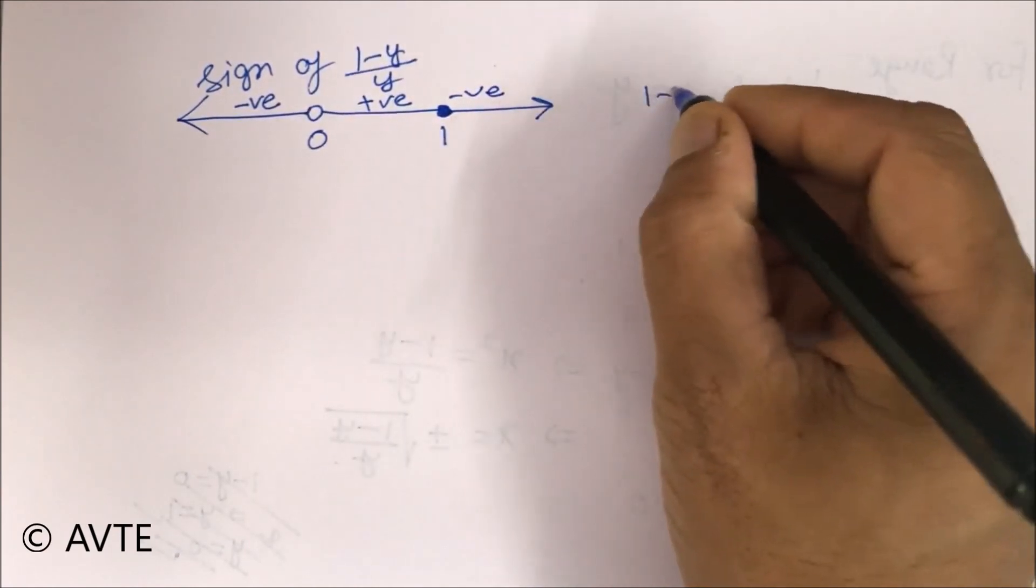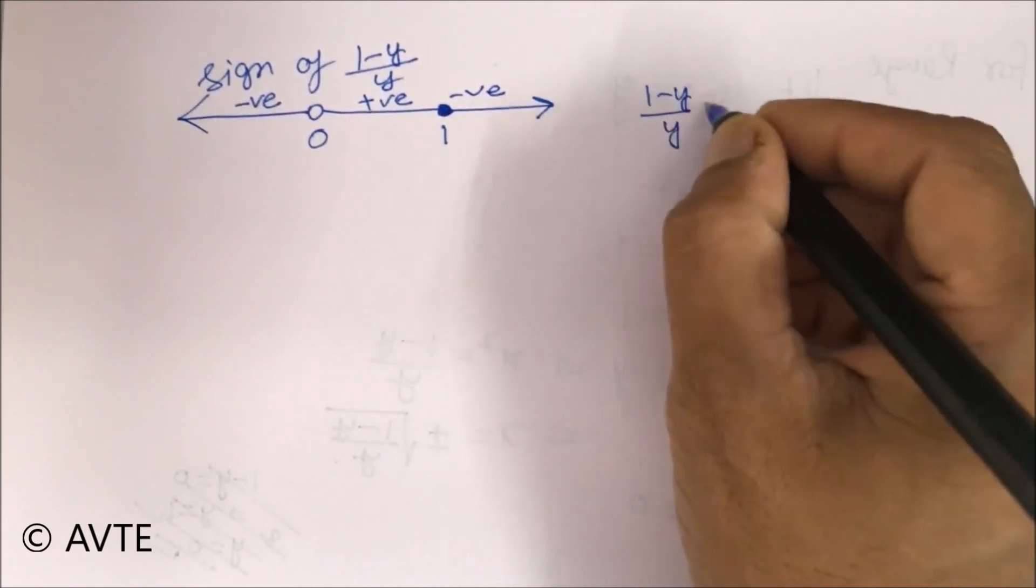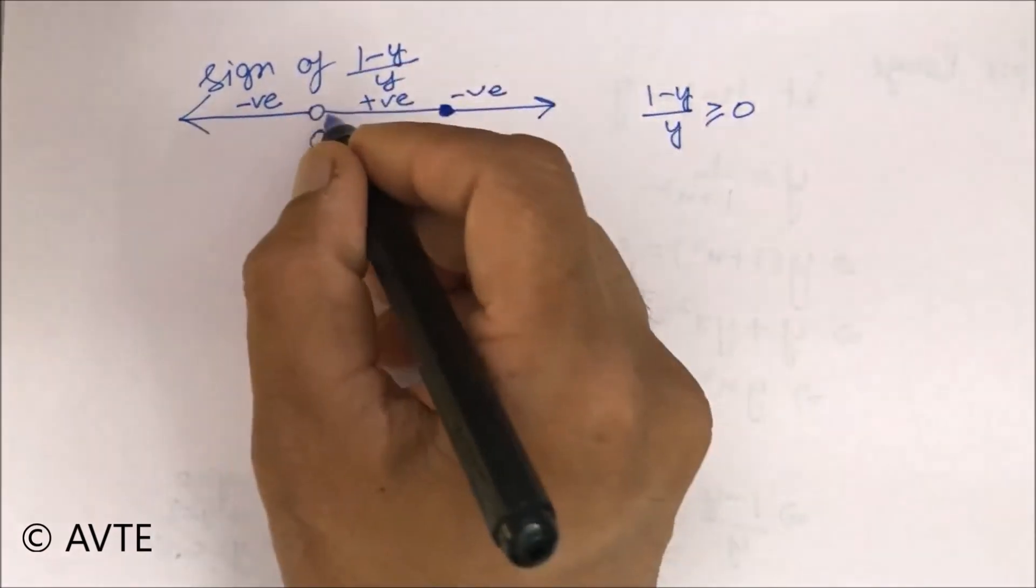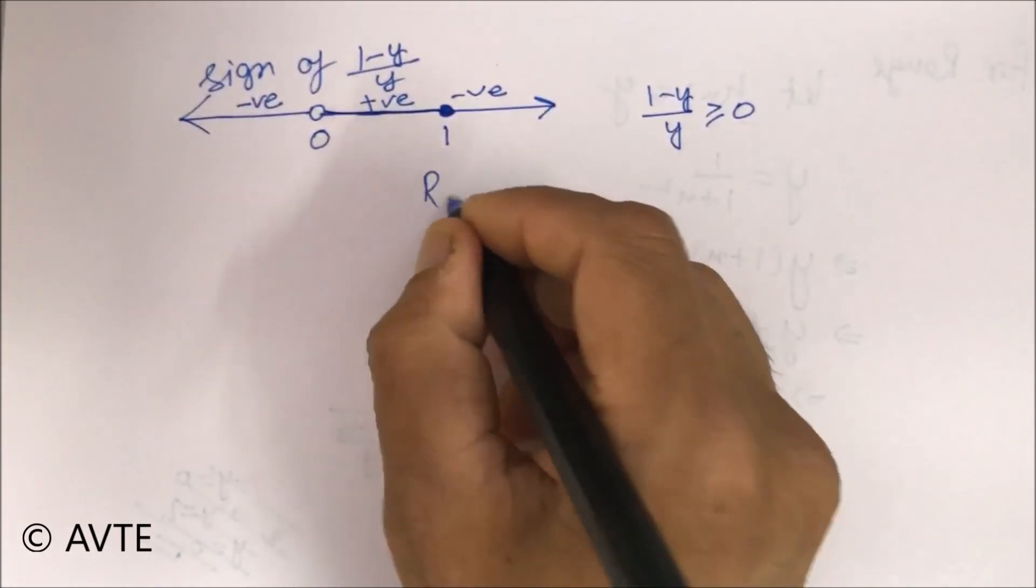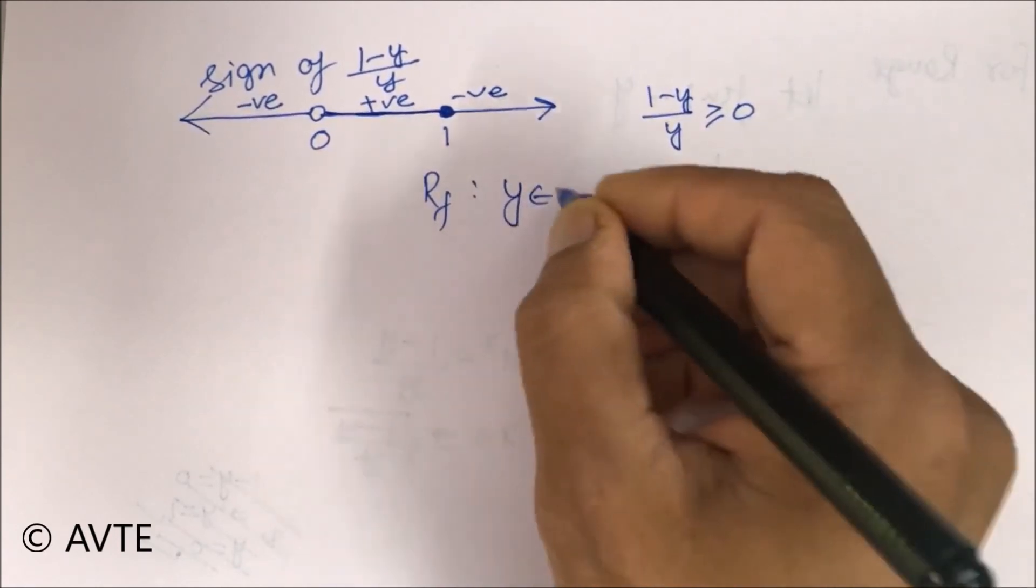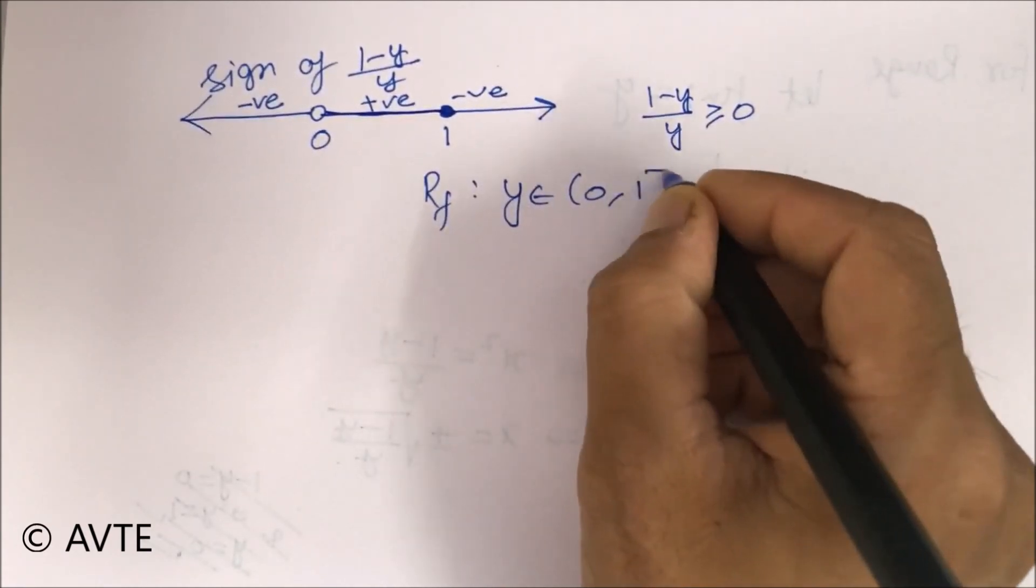Since we need 1 minus y upon y to be greater than equal to 0, so we take only this much part and the range becomes open interval of 0 to close interval of 1.